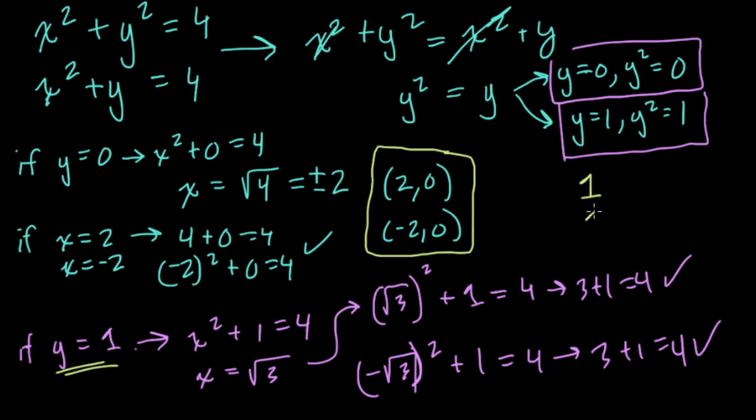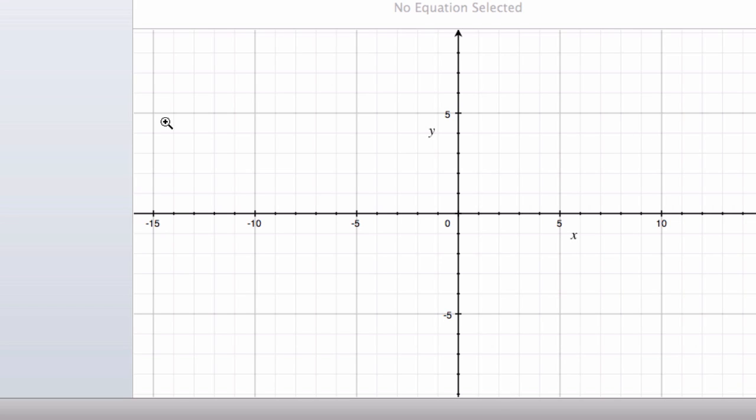when y was equal to 1, there are two points where y equals 1. And the x values, we have the square root of 3 and the negative square root of 3. And all four points here are intersection points or solutions. And this makes sense if we set this up on a graph.